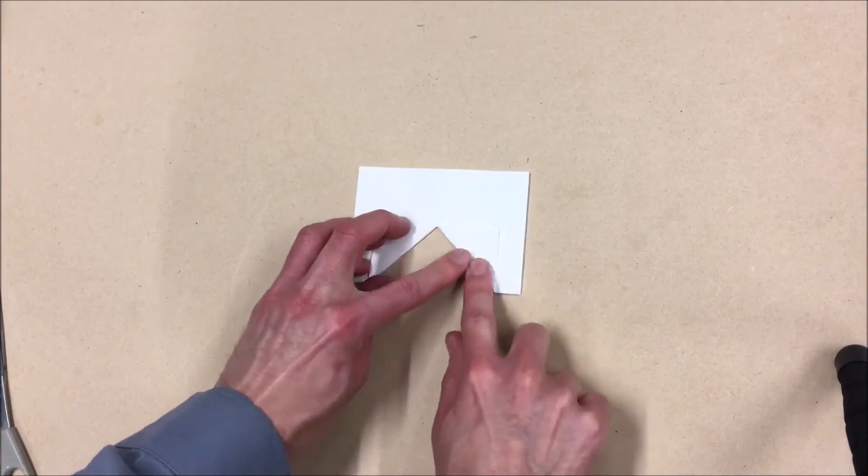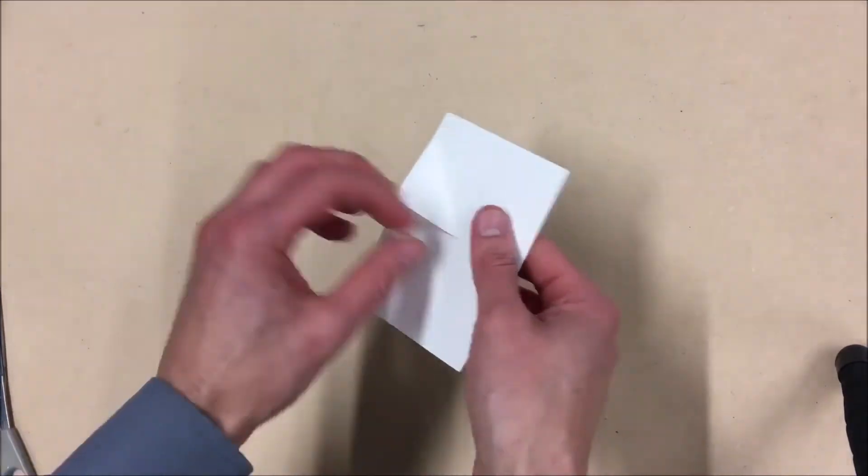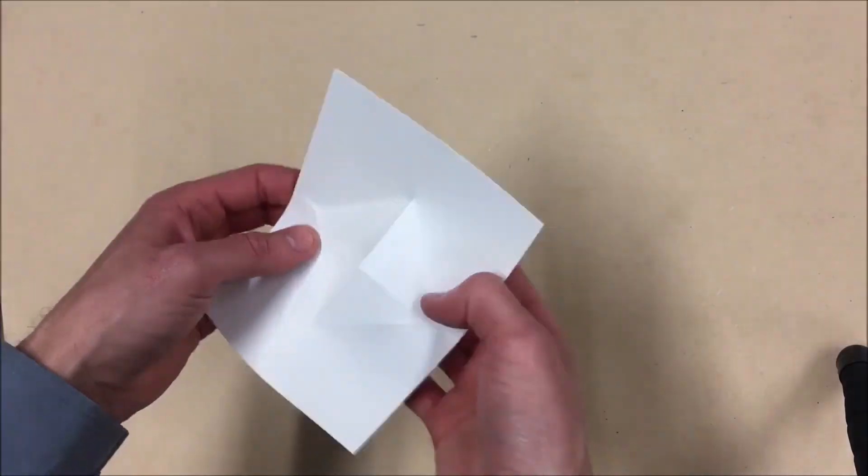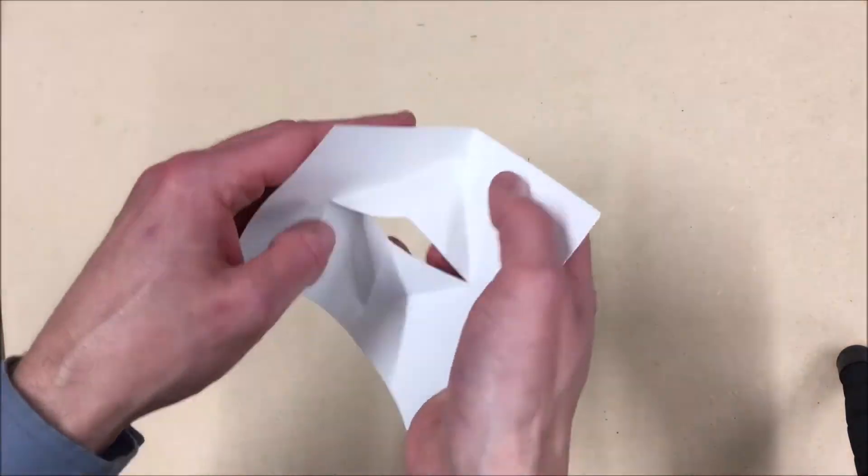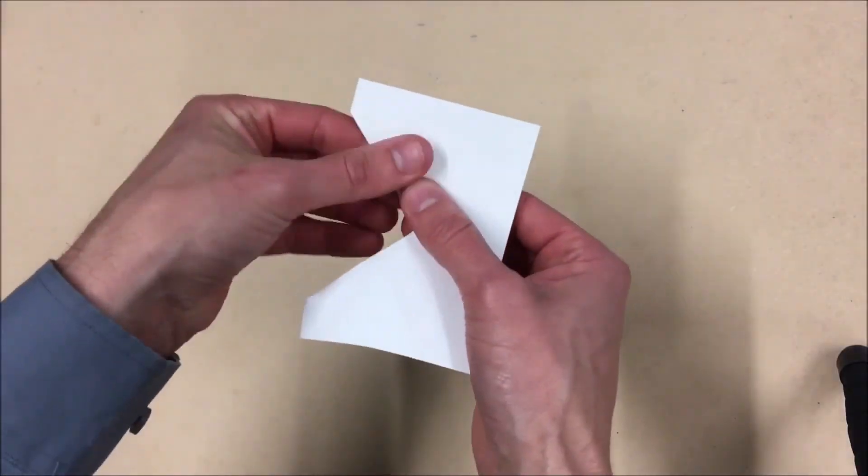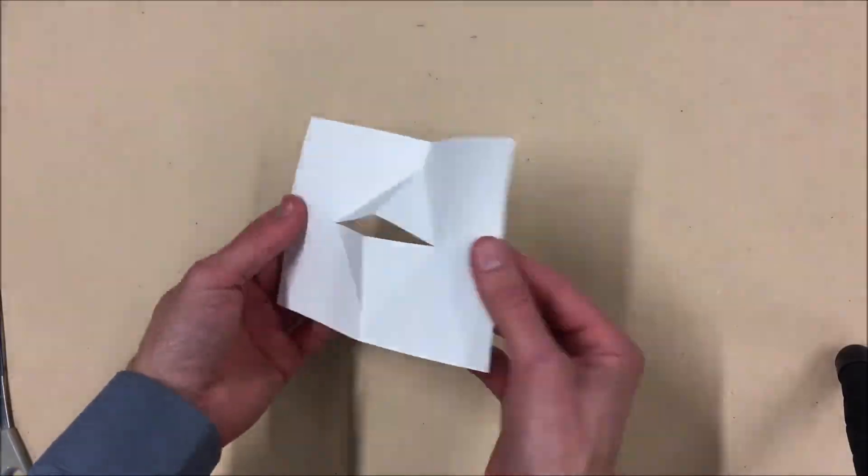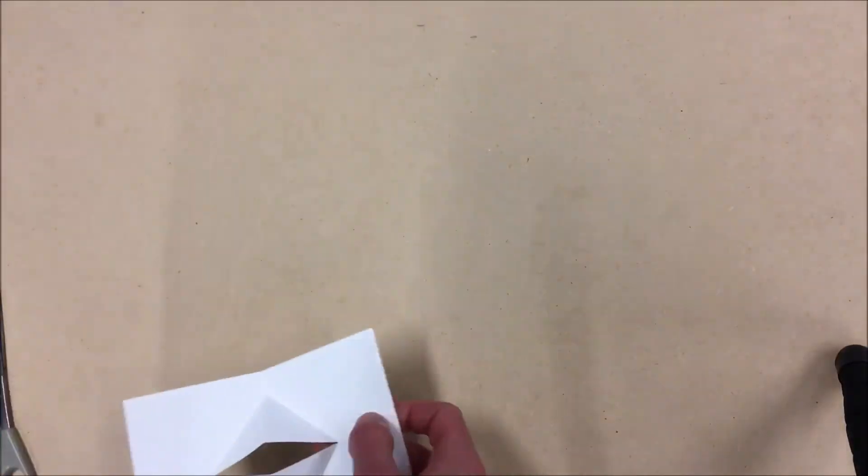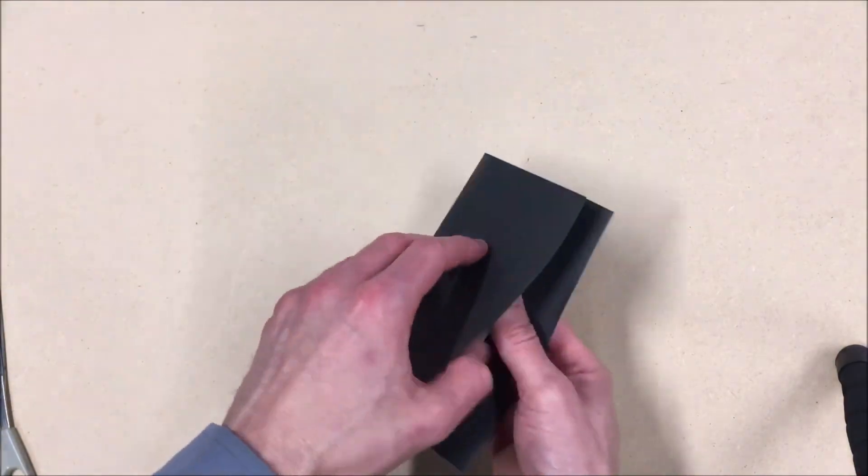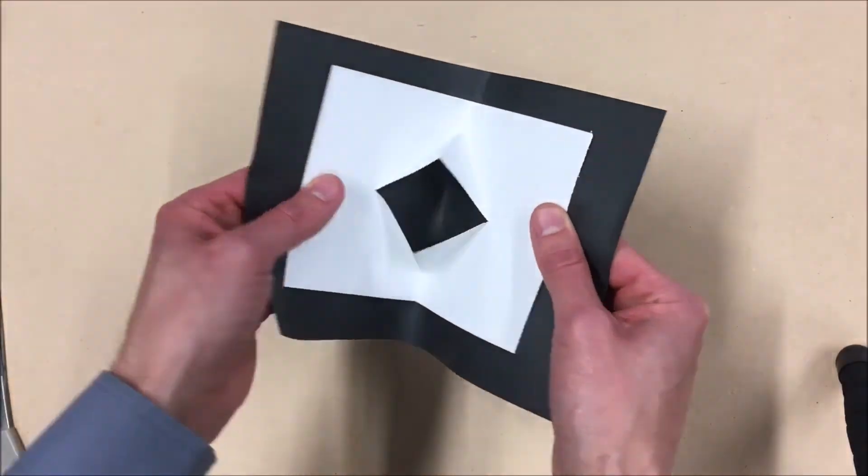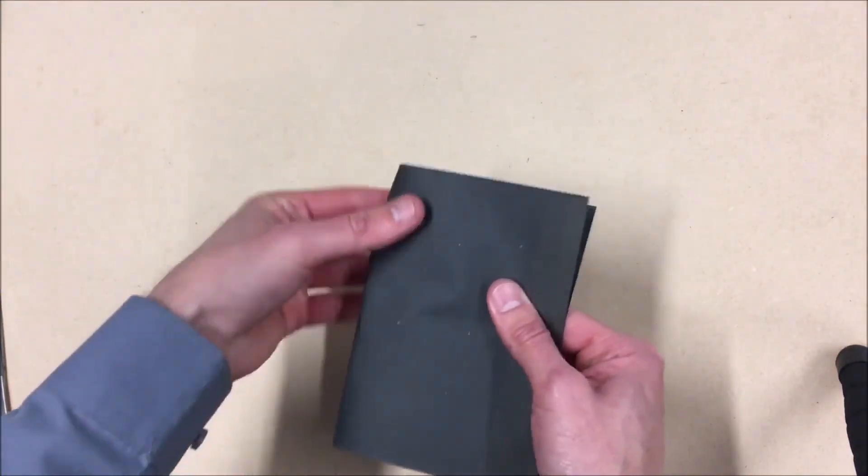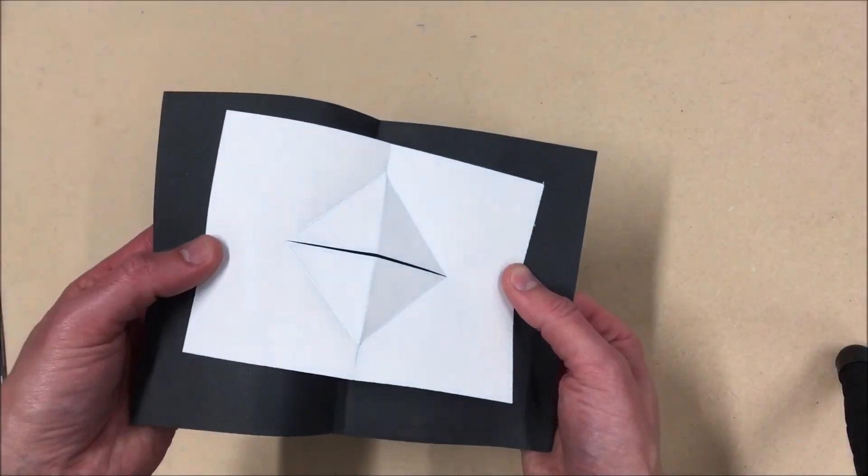Try and make sure they are even. Then fold them back, open the card up and push the folds through. Then it will spring open. Then maybe what you need to do is mount this piece of card onto a larger piece. So it creates a back to the actual mouth opening. So it's not a hole showing straight through.